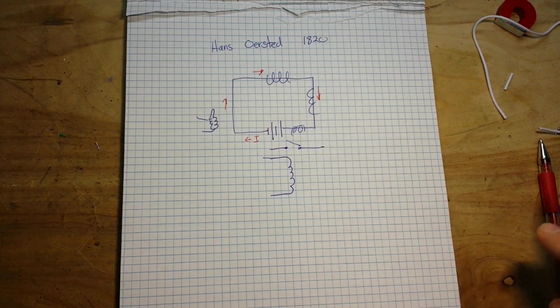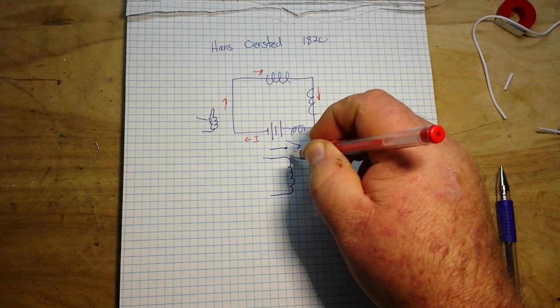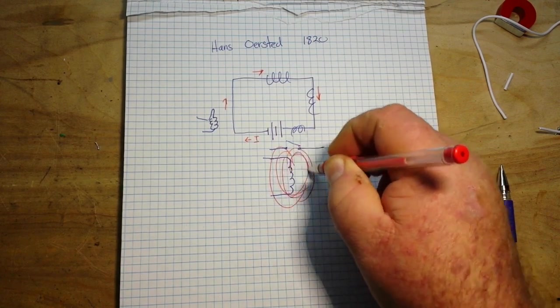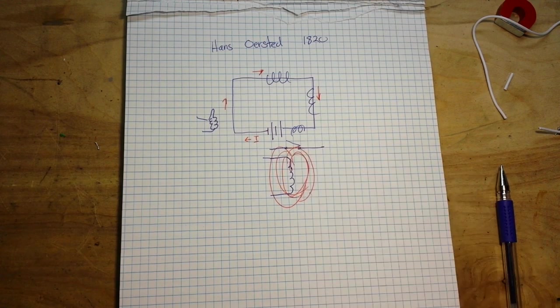Now another example of something like this would be a relay. So we have a coil and we have a switch, and when that coil is energized.